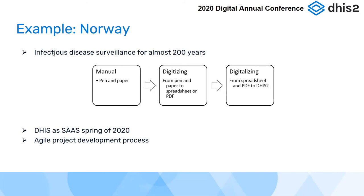During March and April, the effort to trace positive COVID-19 cases was under severe pressure. Contact tracing used pen and paper and later spreadsheets, which was impossible to scale as cases increased. A joint force was established between municipalities, the Norwegian Association of Local and Regional Authorities, the Norwegian Institute of Public Health, and University of Oslo. Norway had no previous history of using DHIS2, but during spring 2020, DHIS2 was introduced as a software-as-a-service for municipalities. Today approximately 100 municipalities are using DHIS2 for contact tracing.